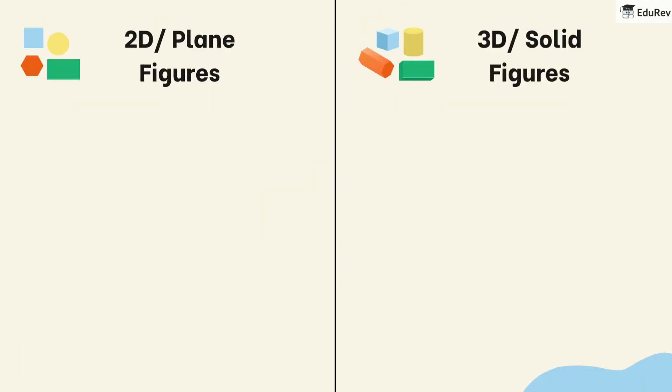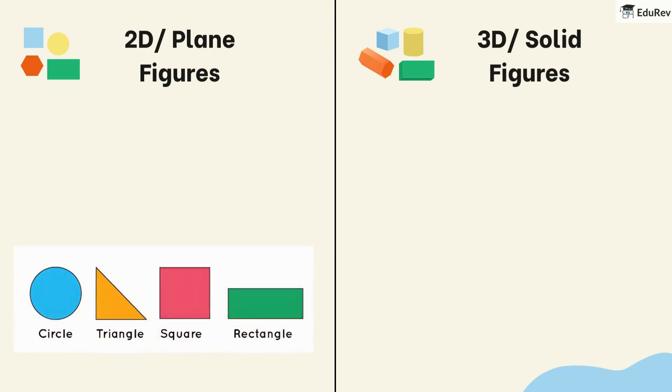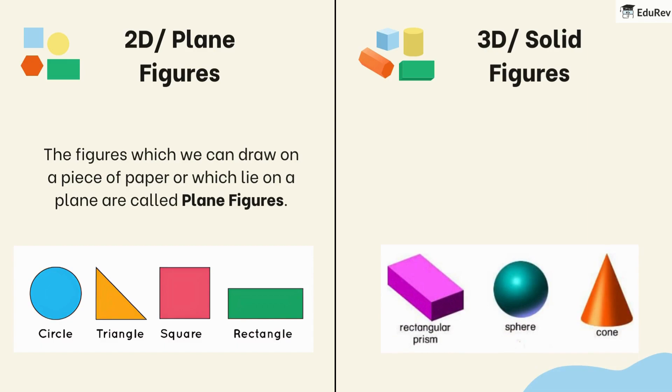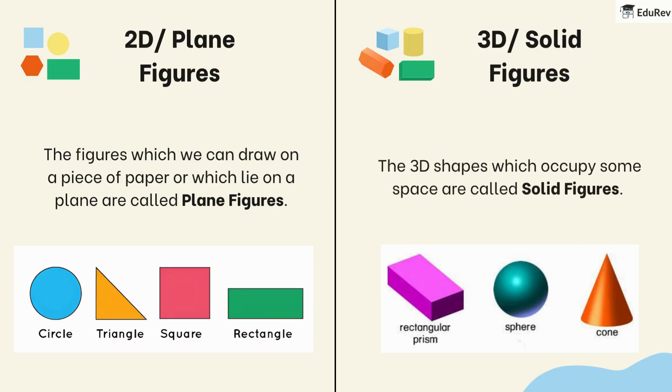First, let's understand the difference between two types of figures. We have 2D or plane figures like circles, triangles, squares, and rectangles. These are flat shapes that we can draw on a piece of paper. We also have 3D or solid figures like rectangular prisms, spheres, and cones. These are 3D shapes that take up space.